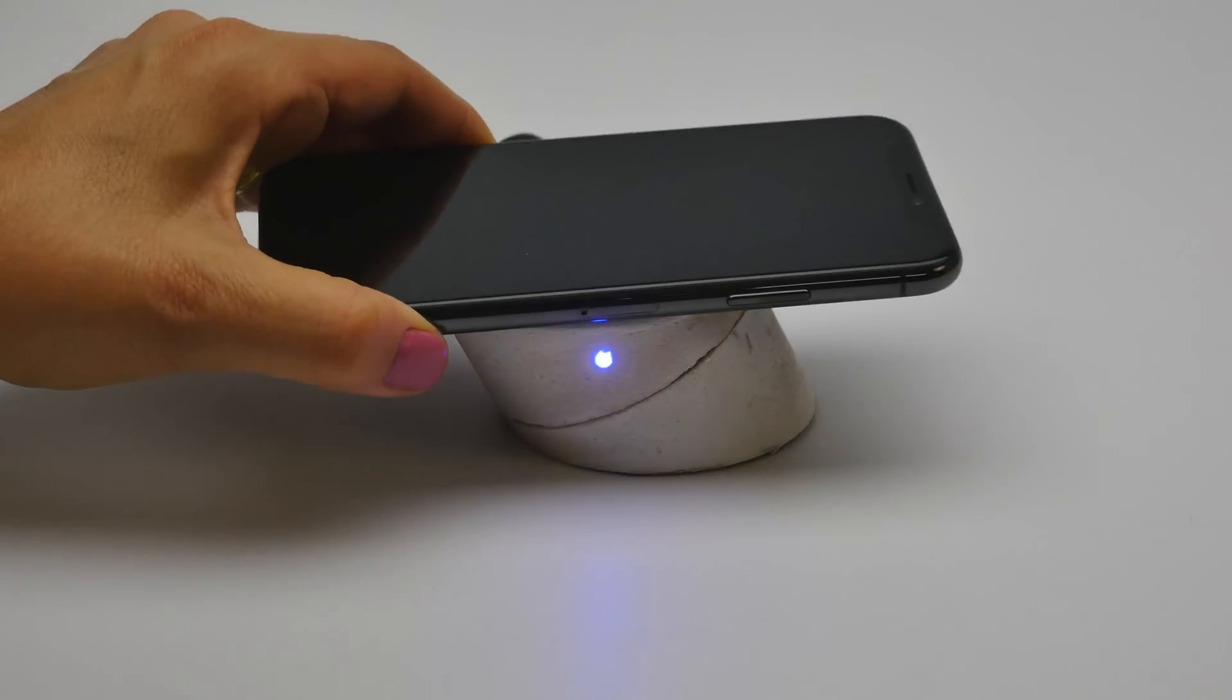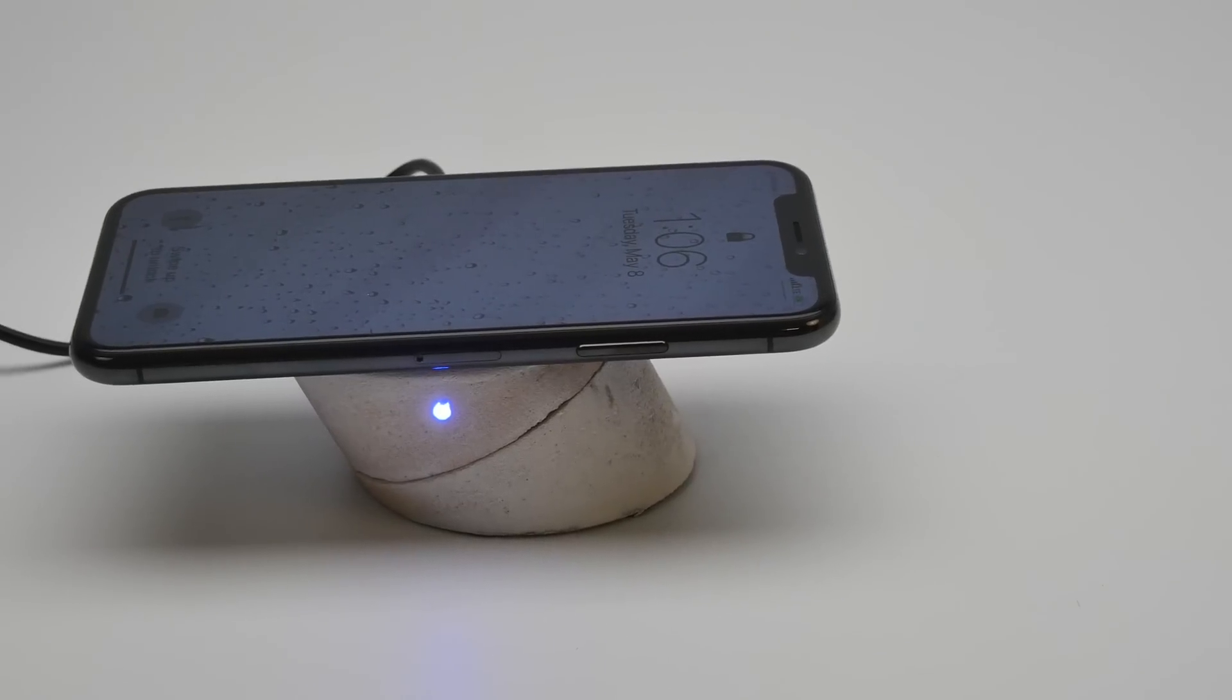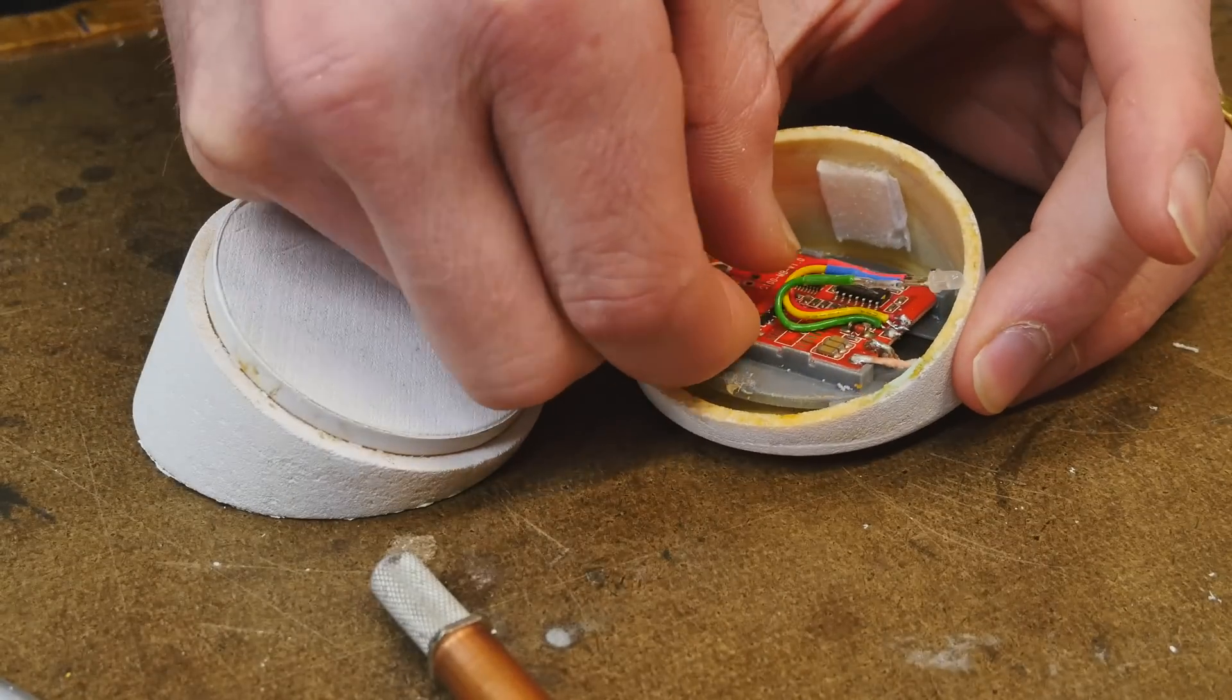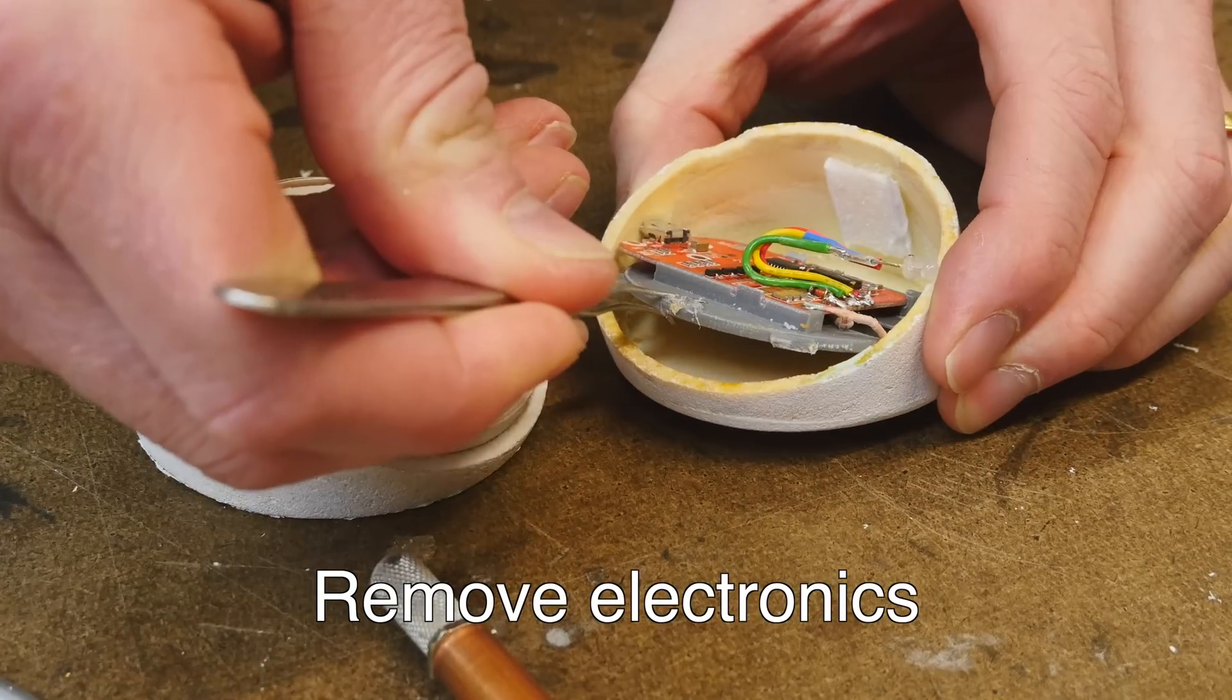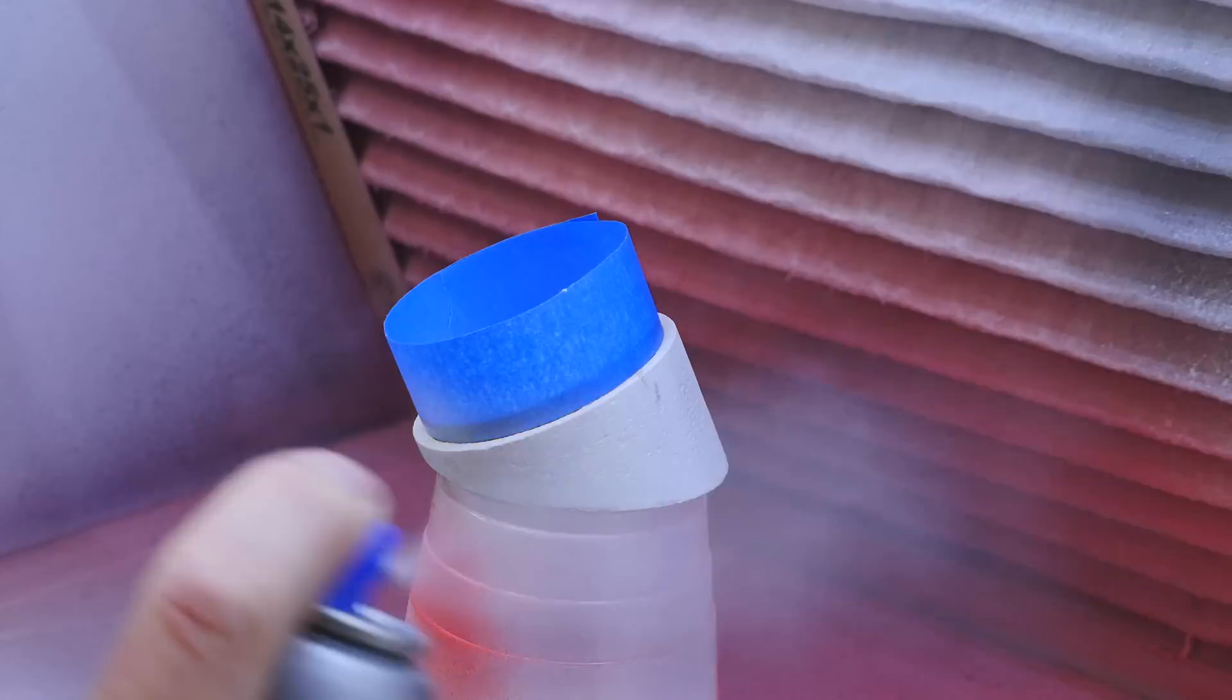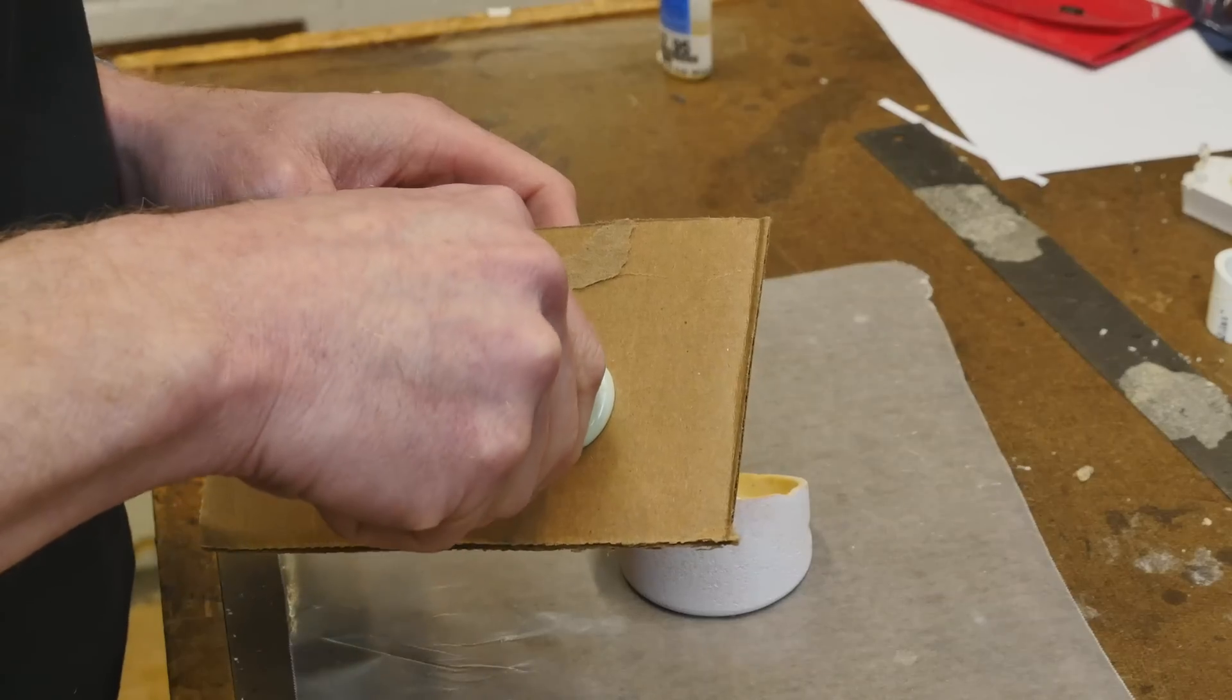In this video we're going to take a look at the continued design process of finishing this foam wireless charger mockup. In the previous video we got to where we are here. I'm going to take the electronics out so that we can finish the foam and get it to that nice shiny surface that we want.